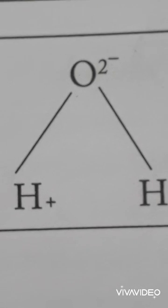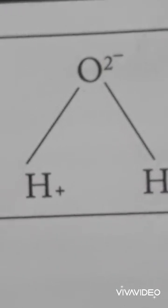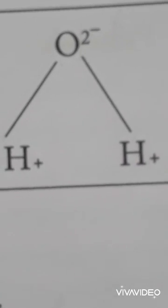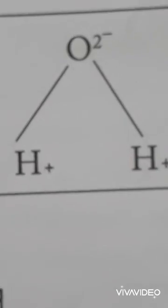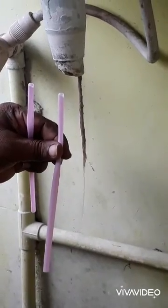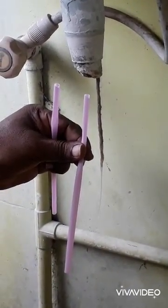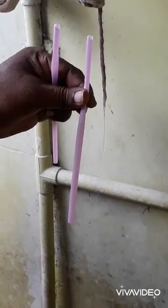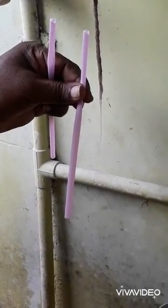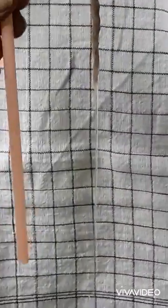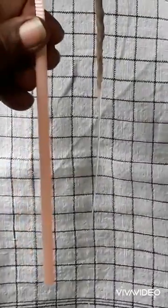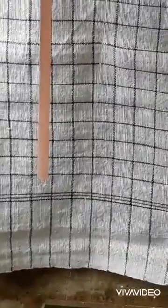We know that water has two elements — hydrogen and oxygen. Oxygen is negatively charged and hydrogen is positively charged. Now let us take the straw and tissue paper and rub them with each other. The straw gets a positive charge and the tissue paper gets a negative charge. Now, a vertically flowing single line of water is inclined towards the positively charged straw when placed next to it.